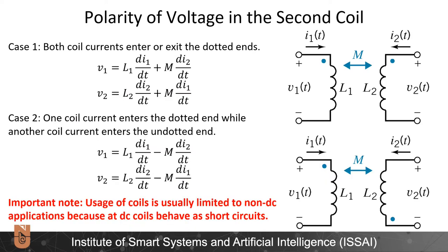For a coupled inductor, the voltages V1 and V2 must account for both self-inductance and mutual inductance, and also where current enters the coils according to the dot convention. When dots are both on the positive polarity: V1 equals L1·dI1/dt plus M·dI2/dt, and V2 equals L2·dI2/dt plus M·dI1/dt. If the dot convention has dots on opposite polarities, the same equations apply but the mutual inductance terms become negative.